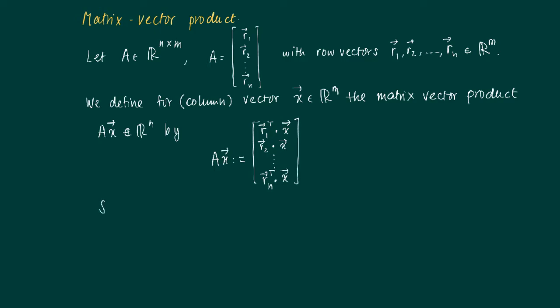So we can form inner products with x. Now notice that the row vectors have dimension, have m components so that actually we get a good match with the dimensions of x.